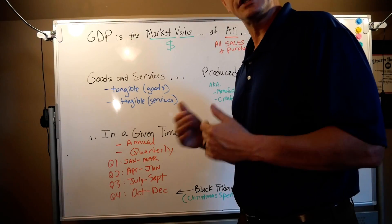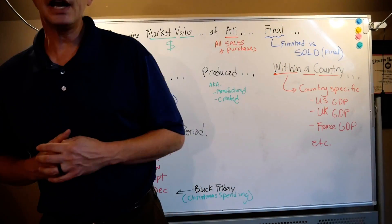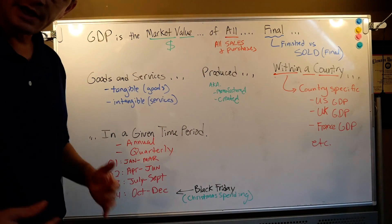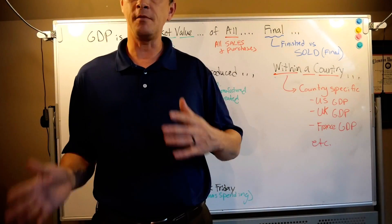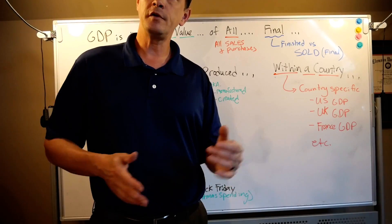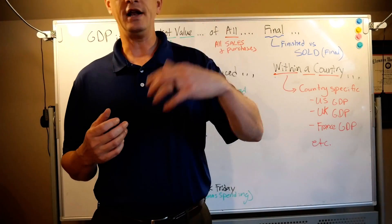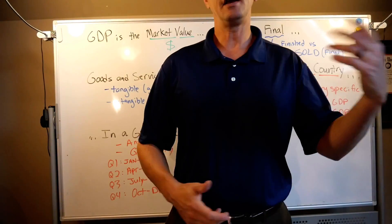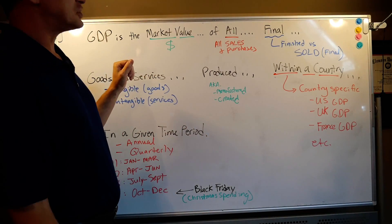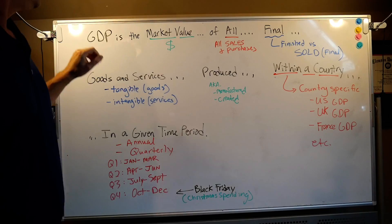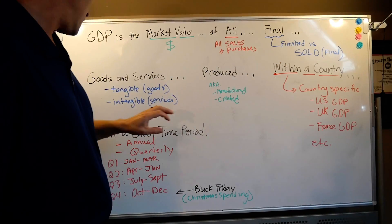First, we need to decide which side of the counter we're measuring from, and we're going to be on the consumer side. So why is the chapter called Measuring a Nation's Income? That's more or less from the firm's point of view — income. If income equals expenditure, you could say income and mean expenditure. If you measure all the transactions that consumers have, you also know the income that firms have. So that's a quick explanation of the chapter title. GDP — Gross Domestic Product — is the market value of all final goods and services produced within a country in a given time period.